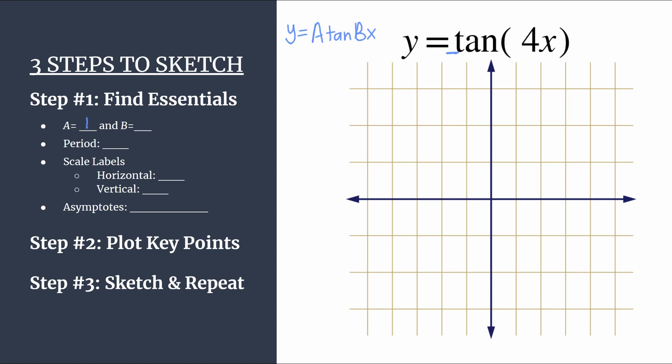B is the coefficient of x, so that is 4 in this case. And b tells us how many cycles of tangent will happen between 0 and pi, and it also helps us calculate the period. So remember, for tangent, we calculate the period taking pi and dividing by 4. Tangent's the special one. Pi divided by b. So pi divided by 4 in our case.